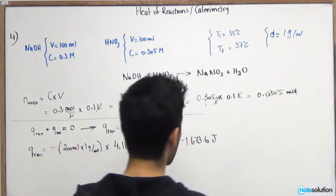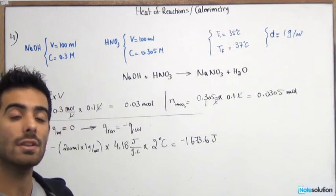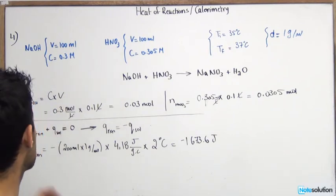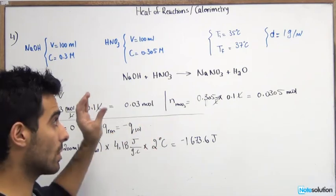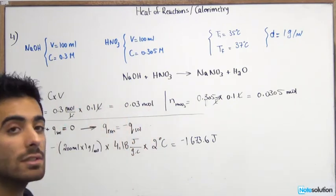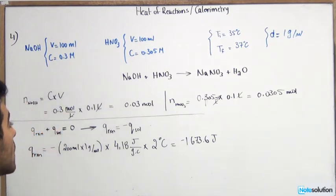Now this is not what we're asked for. We're asked for delta H reaction. Delta H reaction is different than Q reaction. Remember this Q is for the reaction that's occurring here. But we need to change it to delta H reaction which is per mole of a substance.